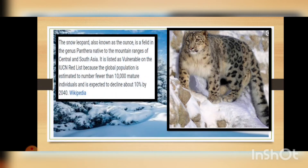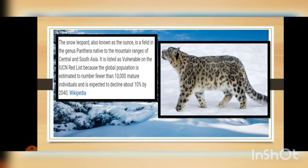Next we are moving on to another animal living in the cold region — the snow leopard, also known as the ounce. It is a felid in the genus Panthera native to the mountain ranges of central and south Asia. It is listed as Vulnerable on the IUCN Red List because the global population is estimated to number fewer than 10,000 mature individuals and is expected to decline about 10% by 2040. This animal is going to be extinct very soon — they are very rare.